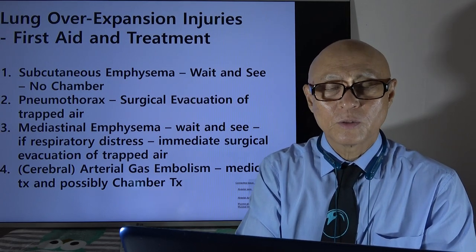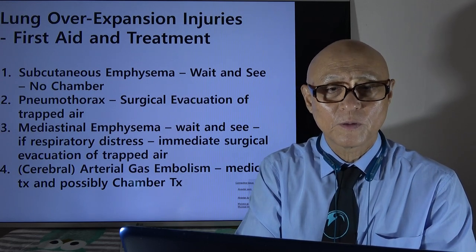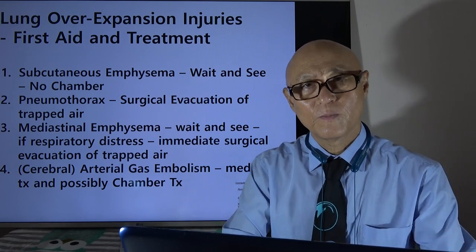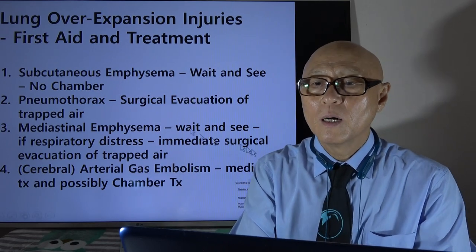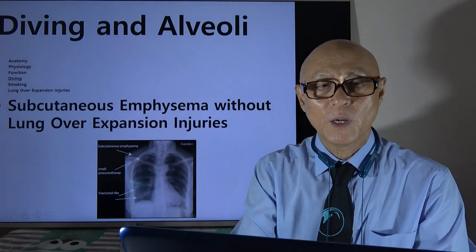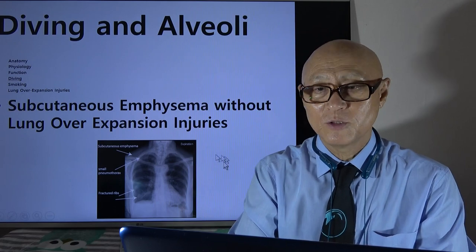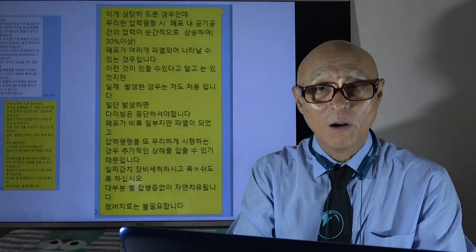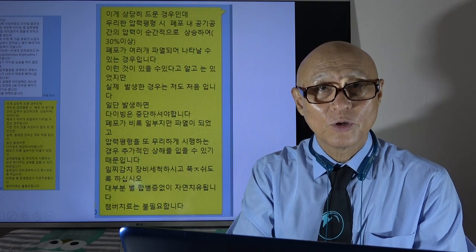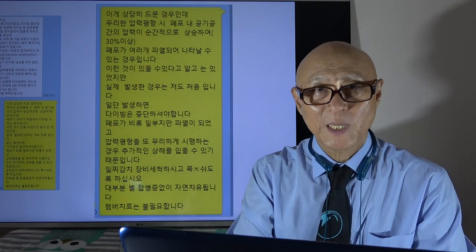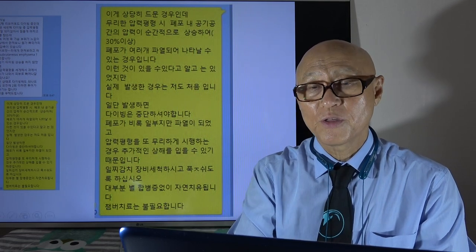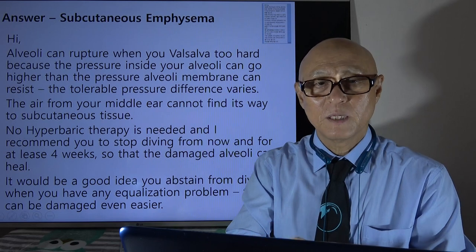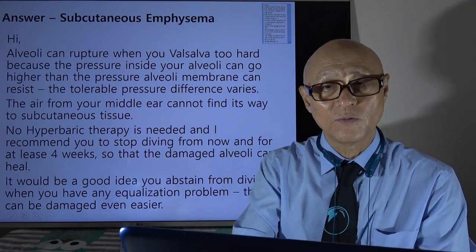Cerebral arterial gas embolism requires very vigorous medical therapy — not just the chamber. We have to treat the patient like all other stroke cases. Regarding subcutaneous and mediastinal emphysema without lung overexpansion injury: it happens when you Valsalva too hard — the pressure inside the alveolar space goes up and can rupture the thin alveoli membrane. The air escapes to subcutaneous tissue and in most cases it is not very severe, so you can wait and see.